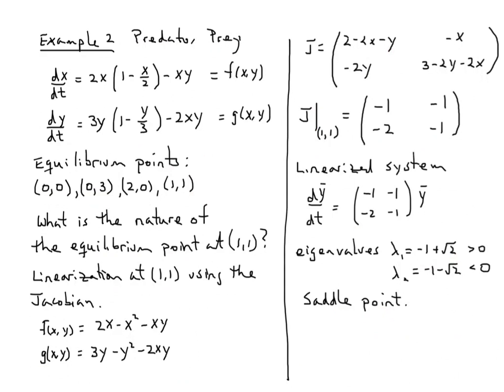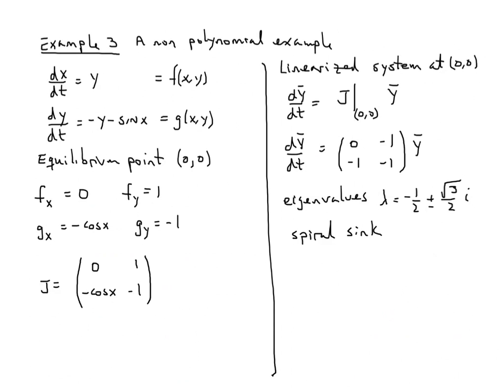Finally, last example—same example I showed in class. In this case where it's nonlinear, it's not a polynomial; we have a trigonometric function that's making it nonlinear. (0,0) is an equilibrium point. Looking at the partial derivatives f_x, f_y, g_x, and g_y, I use those to build the Jacobian. Since I'm interested in linearizing the system at (0,0), I evaluate the Jacobian at (0,0). The only term that has a variable in it is this one, and cosine at zero is one, so here is our matrix.